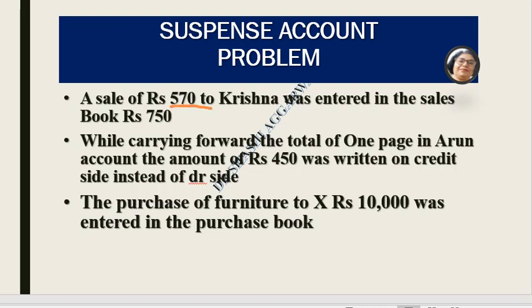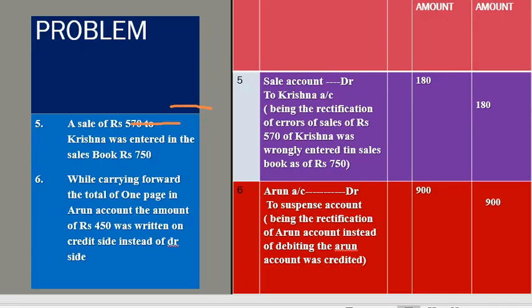For Error 5: A sale of Rs. 570 to Krishna was entered in the sale book as Rs. 750. The correct entry was Krishna debit and sales credit for Rs. 570, but it was recorded as Rs. 750. The difference is Rs. 180. To rectify, we debit the suspense account and credit the sale account by Rs. 180, being the rectification of the sale to Krishna wrongly entered in the sale book as Rs. 750 instead of Rs. 570.